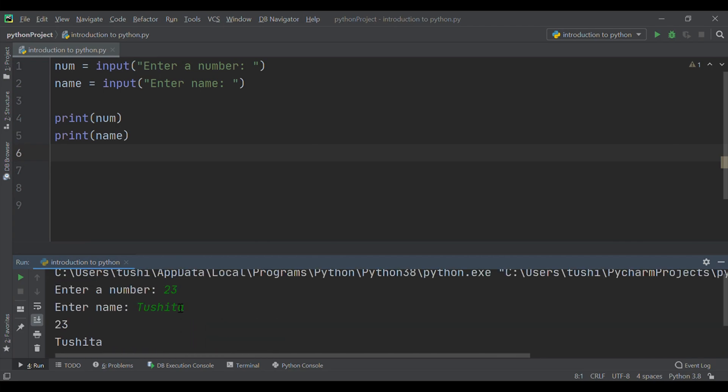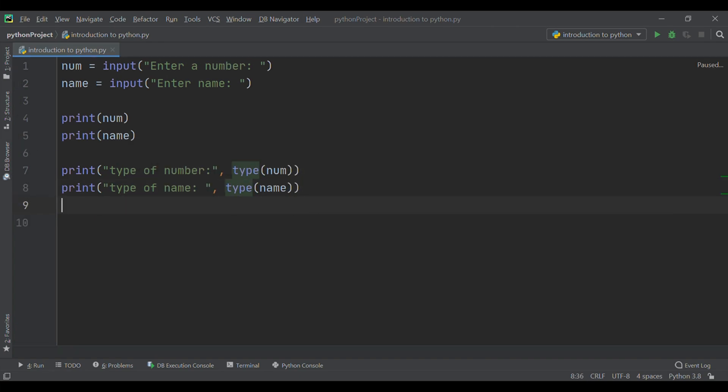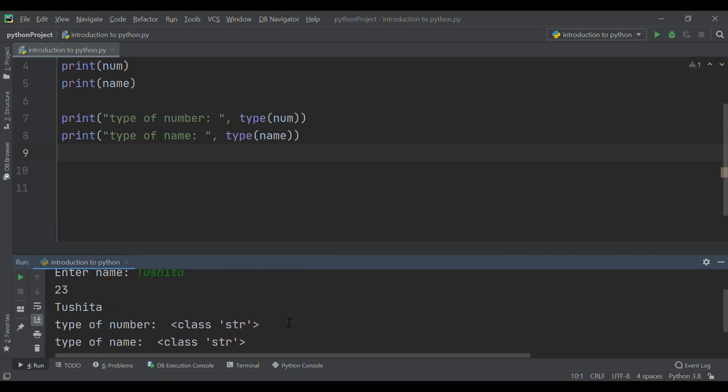Now let us print the type of the input value we had taken from the user. We must note one thing: whatever you enter as input the input function converts it into a string. If you enter an integer value still the input function will convert it into a string. You need to explicitly convert it into an integer in your code using typecasting.